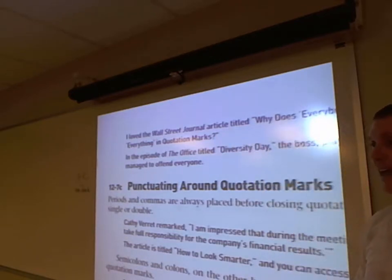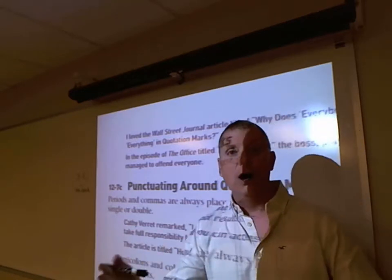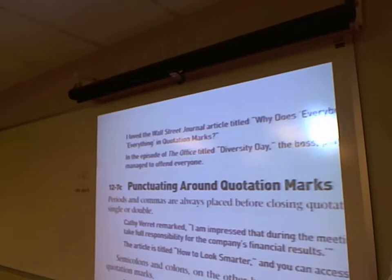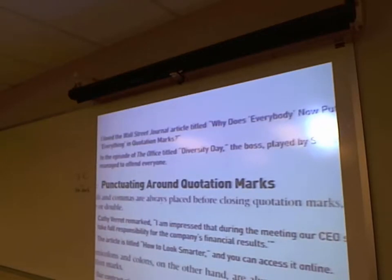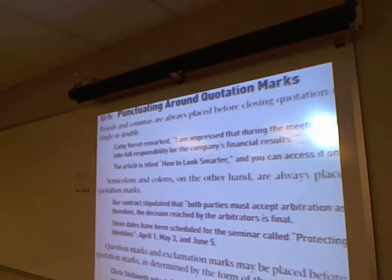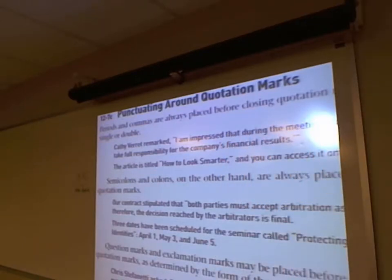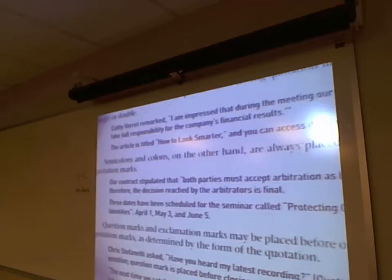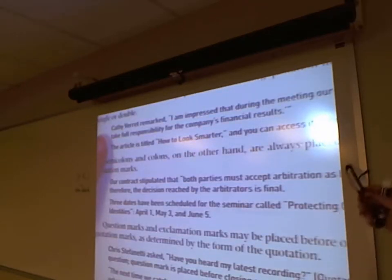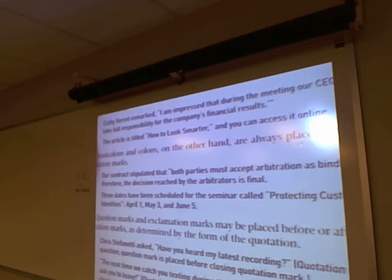Periods and commas always — always, always — appear within the quotation marks, whether they're single or double. 'Kathy Barat remarked, "I am impressed that during the meeting our CEO said, 'I take full responsibility for the company's financial records.'"' The article titled 'How to Look Smarter' — commas within the quotation. Semicolons and colons always appear outside of the quotation marks.